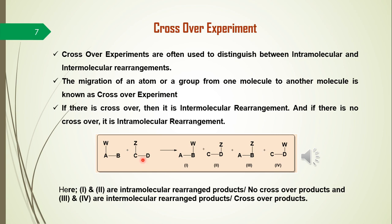The other rearrangements where there is no crossover: if the migrating group migrates within the molecule, there is no crossover. Similarly, if migrating group Z migrates from C to D within the same molecule, there is no crossover. Among these products, the first and second are considered no-crossover (intramolecular) rearrangement products, whereas the third and fourth products are considered intermolecular rearrangements where crossover products are observed.